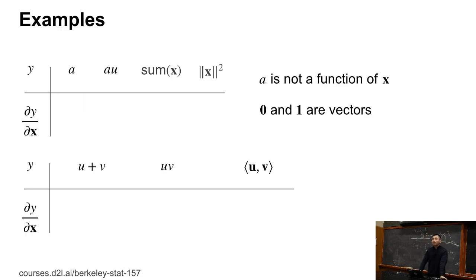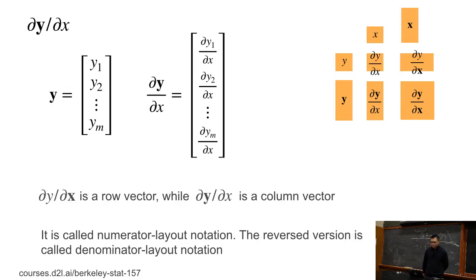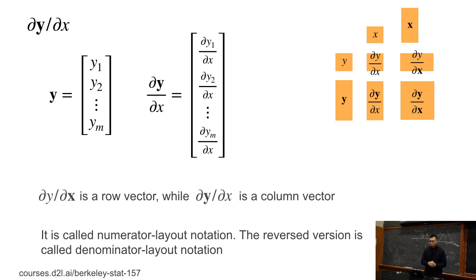The partial of v over partial x, when both are vectors, is called the Jacobian matrix. Now switching: if y is a vector and x is a scalar, we get a column vector where the i-th element is partial yi over partial x. Notice: when x is a vector, we got a row vector; when y is a vector, we get a column vector. This is called the numerator layout.